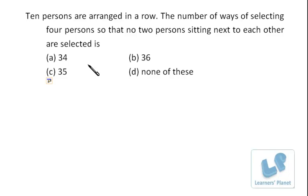Now friends, let's see this problem. 10 persons are arranged in a row. The number of ways of selecting 4 persons so that no 2 persons sitting next to each other are selected.